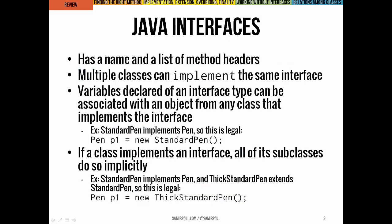To review interfaces from a few lectures ago — the big ideas to take away: Java interfaces have a name and a list of method headers. That's really all there is to an interface. It's a list and a bunch of stubs; there's no implementation code. More than one class can implement a single interface — more than one class can be a pen. That was our crucial example.